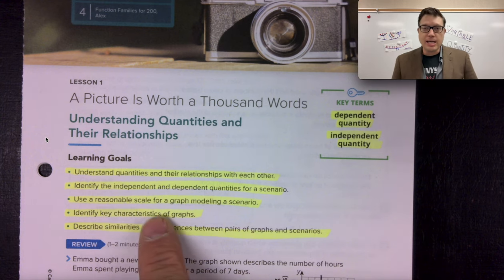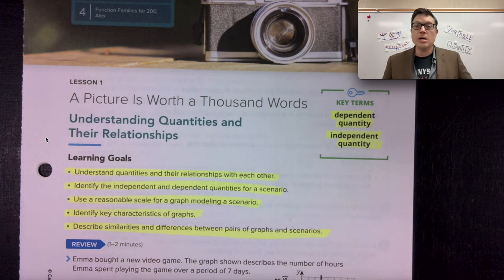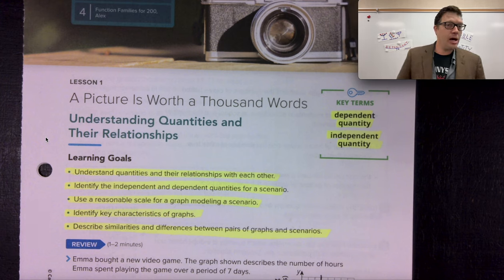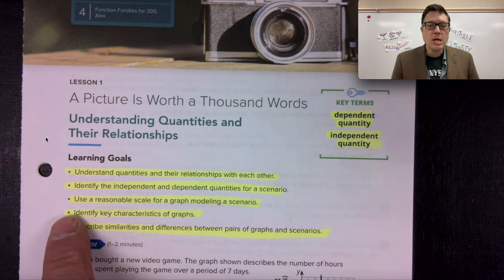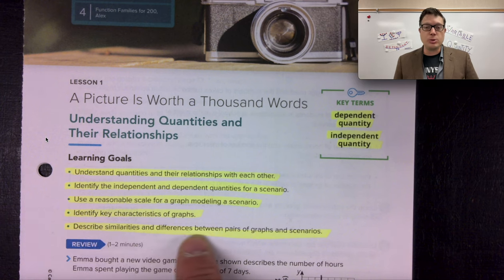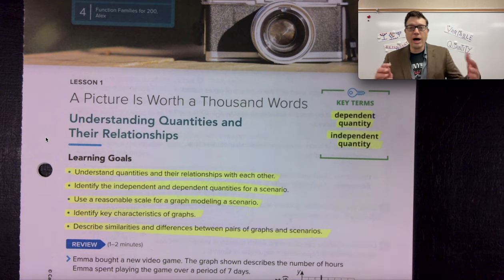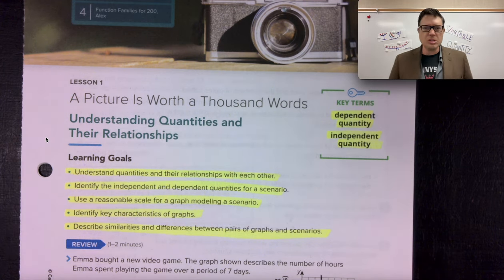So there's a word of highlighting. I can identify key characteristics of graphs, which we're going to do today. It's an important concept to be able to describe whether the graph is increasing, decreasing, if it has a certain symmetry to it, math words along the way. Describing similarities and differences between pairs of graphs and scenarios. So if you highlighted that, and those are our key terms in our learning goals, well, let's do a little spiral review.